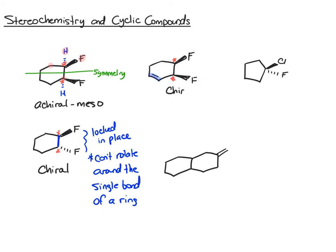The next example — even though there's a ring coming off of this three-dimensional center, you have this side of the ring which is identical to this side of the ring, so there's symmetry through that ring. Basically what that means is there are not four different groups around that carbon, so this is not a chiral center. With no chiral centers, it's just an achiral molecule.